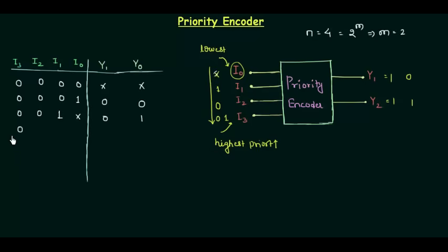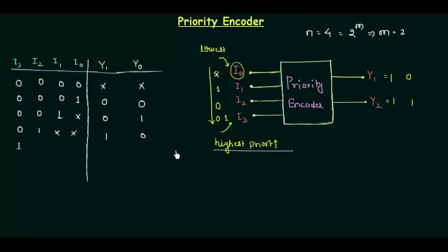Next case: i3 is 0, i2 is 1. Since i2 has higher priority than i1 and i0, we don't have to look at i1 and i0 — the output will be 1, 0. Finally, when i3 is 1, it has the highest priority, so i2, i1, and i0 are all don't care. Whatever their values, priority is given to i3 and the output reflects i3, so y1, y0 is 1, 1.